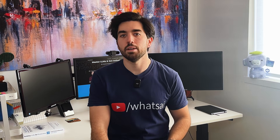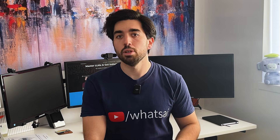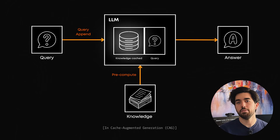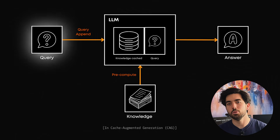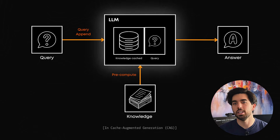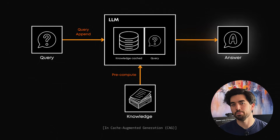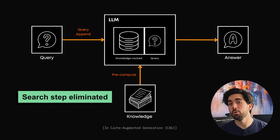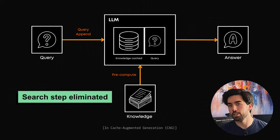Put simply, instead of searching through a database every time like RAG does, CAG preloads all the information into the model's memory — all of it. Here's what happens in a CAG-based system: you preload knowledge in the KV cache, the user sends a question, it has direct access to the cached knowledge, and instantly answers. With CAG, we completely eliminate the search step, making responses super fast and more reliable, since we are not depending on a search algorithm to find the right information.